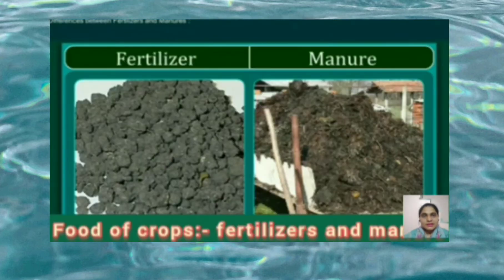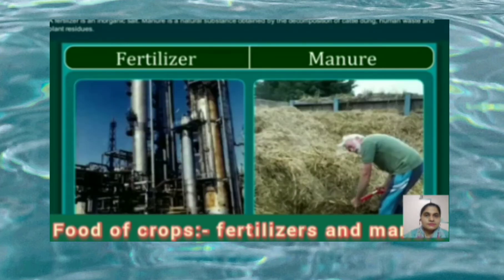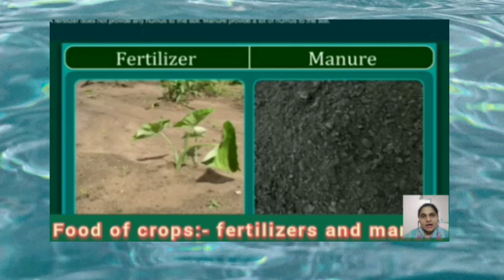The difference between fertilizers and manures: a fertilizer is an inorganic salt, while manure is a natural substance obtained by the decomposition of cattle dung, human waste, and plant residues. A fertilizer is prepared in factories; manure can be prepared in fields. A fertilizer does not provide any humus to the soil, while manure provides a lot of humus to the soil.